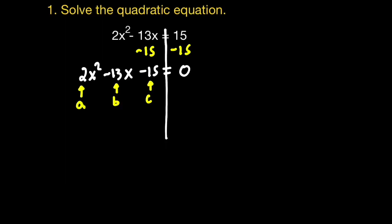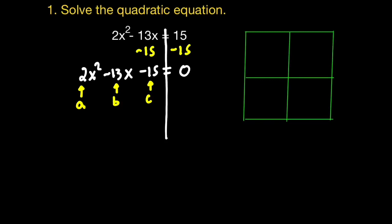I'll label all of the key terms: the a value, the b value, and the c value. I notice that the a value is not 1, so I cannot apply the x method. I can however apply the reverse box method. To apply the box method, I'll begin by recording the leading term — 2x squared — on the upper left square, and the c value, negative 15, on the bottom right. I'll use a modification of the x method to find the two values that will occupy the two missing spaces.